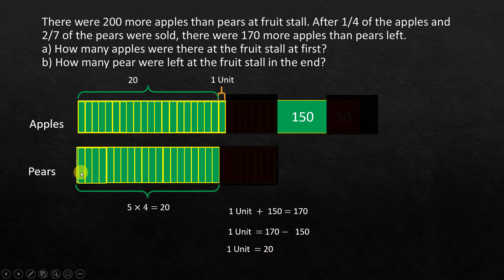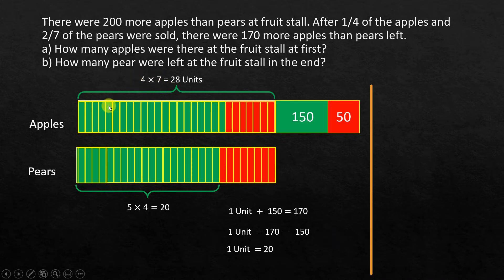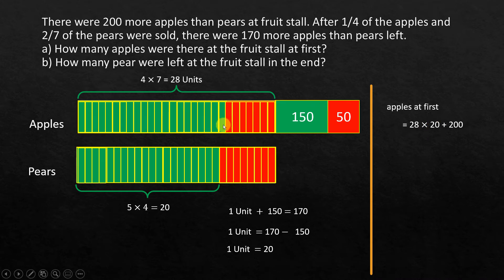That unit size represents 20. Now for question one — how many apples were there at the fruit stall at first? We need to include the units that were sold as well. There were 28 units in total for the unknown part of the apples, plus 200 for the known part. So apples at first equals 28 times 20 plus 200, which is 560 plus 200.